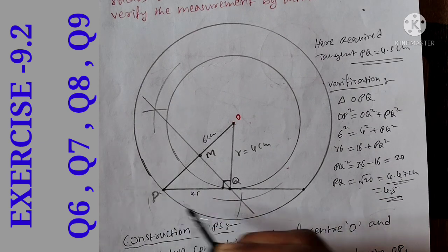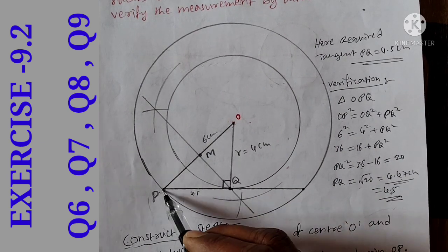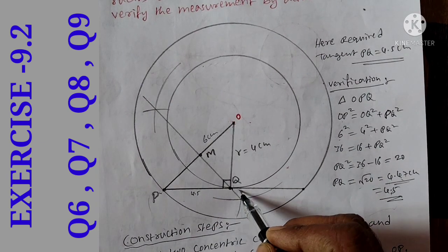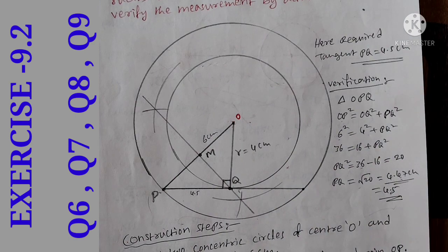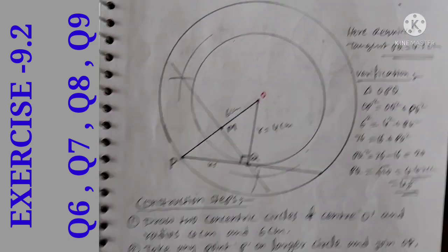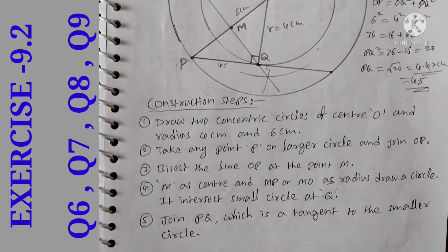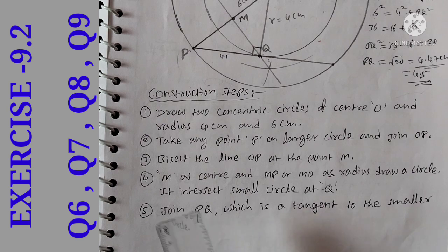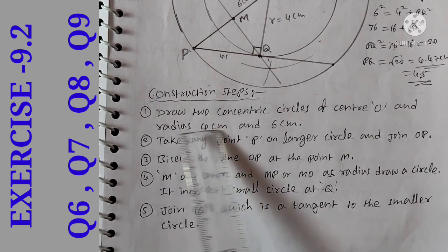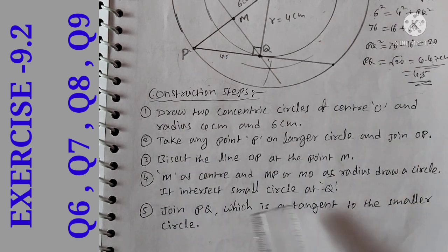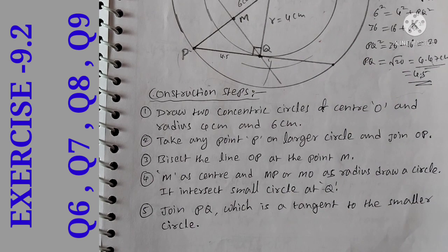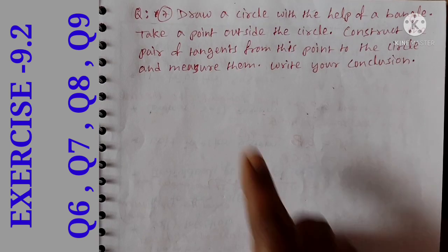If we calculate, it is equal to 4.5, so the diagram is correct. We have noted the construction steps. Question number 7.